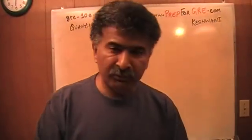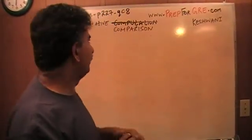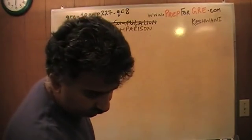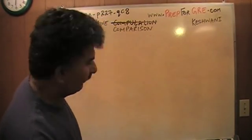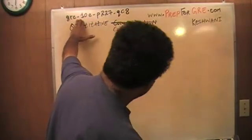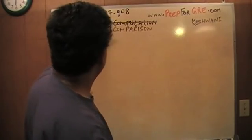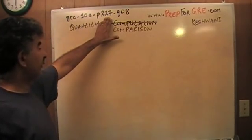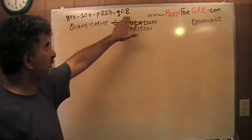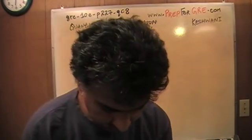The problem that I'm about to solve is one you're going to find on page number 227. The tag you want to use if you're searching for it in the future is GRE-10E for the 10th edition of the book, dash page 227, dash QC, stands for quantitative comparison question, number 8. Let's take a look at it.